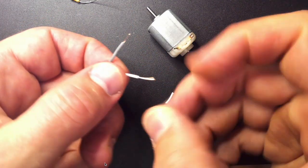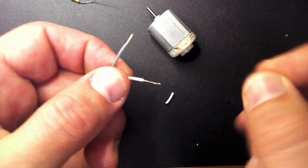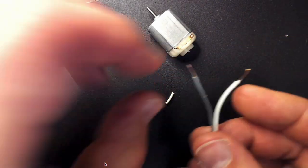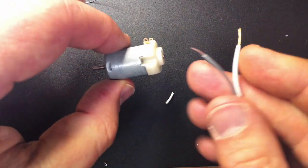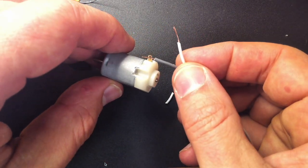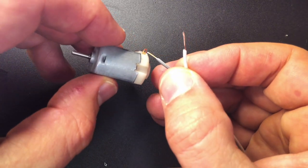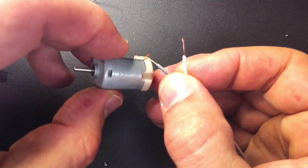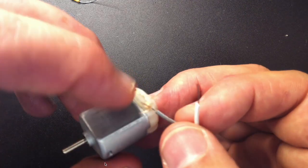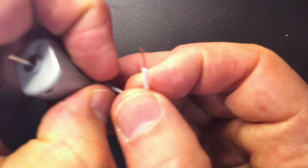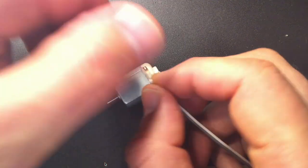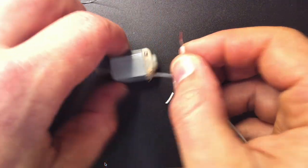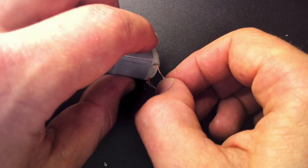Now we could tin them first but what I'm going to do is actually do a little bit of the mechanical connection here as well. If you've got a little bit of a mechanical connection as well as the solder that's not a bad thing. So I'm literally just going to wrap it around a little bit, give those a twist, add them through.